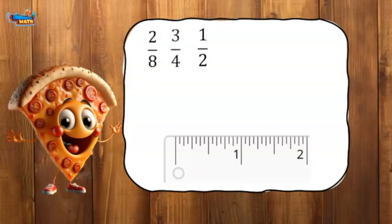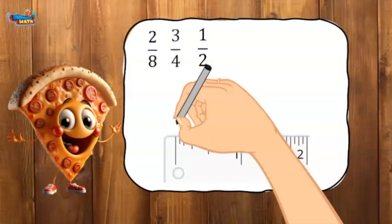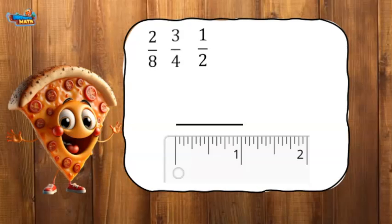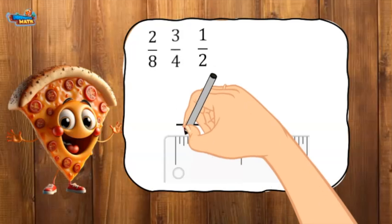Number lines can be used to order fractions. I draw a line measuring one inch. The first fraction has a denominator of eight. I mark each eighth of an inch on the ruler.